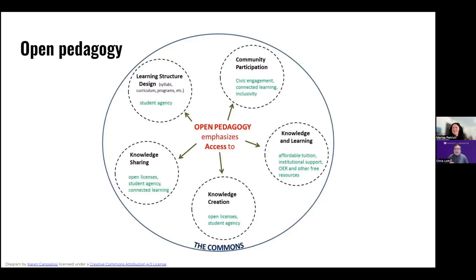In the United States, you have copyright upon creation, and you can choose a license to modify that. Creative Commons licenses are commonly used — they offer 'some rights reserved' in different variations. Ownership questions matter too, especially when working within an institution: if you're creating something as part of your job, it might be considered work-for-hire where your employer owns it. It's definitely something to think about when putting material out there.